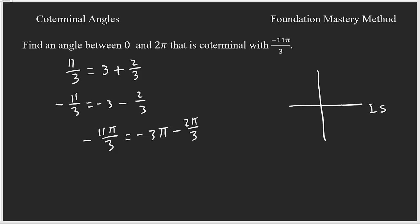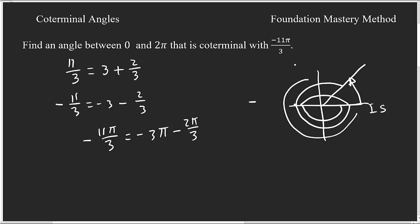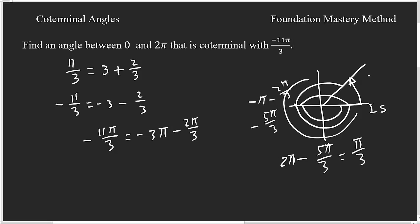Going in the negative direction: 1, 2, 3 full π rotations, and then negative 2π/3 goes further. So the terminal side is at negative π − 2π/3, which equals negative 5π/3. To find the positive coterminal, compute 2π − 5π/3. Using a common denominator: 6π/3 − 5π/3 = π/3. So π/3 is my coterminal angle.